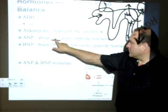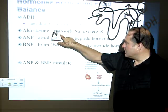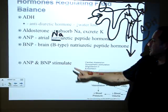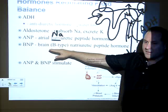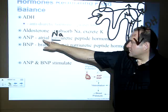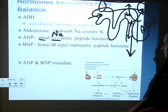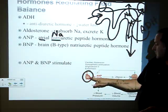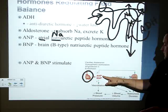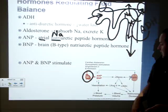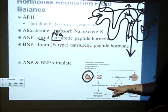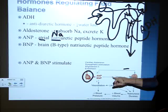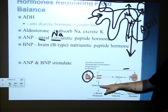Now let's look at ANP and BNP — atrial natriuretic peptide and brain natriuretic peptide. 'Natri' refers to sodium. ANP is made in the atria of the heart. Looking at a chart, ANP and BNP do a couple of things: they increase glomerular filtration rate, decrease renin, and cause vasodilation — all three things simultaneously.